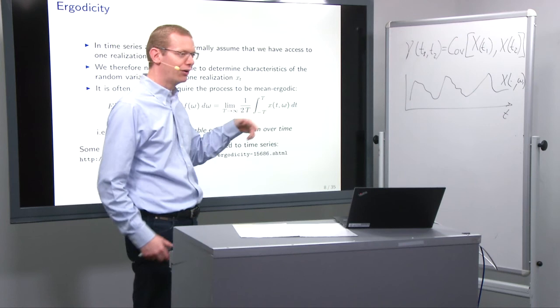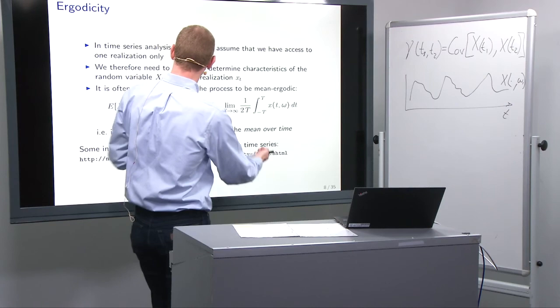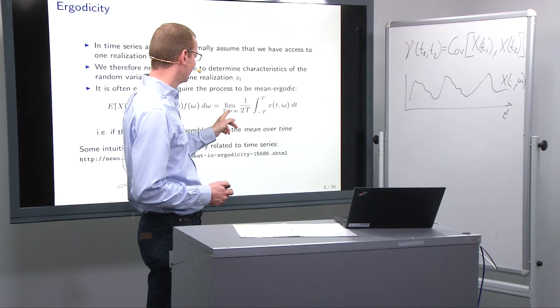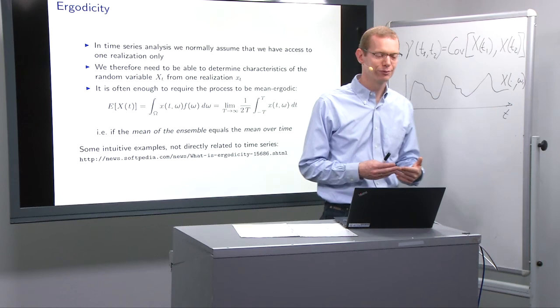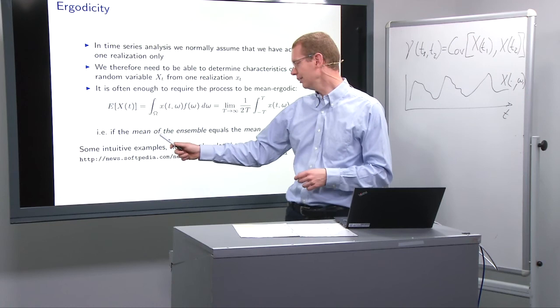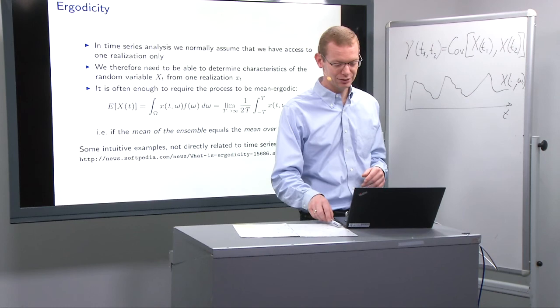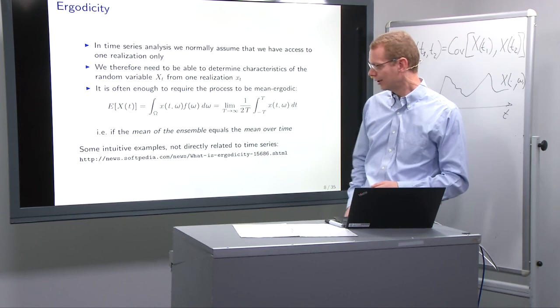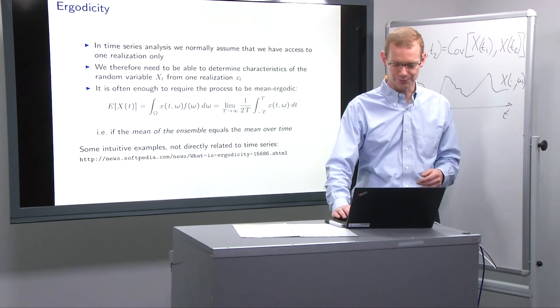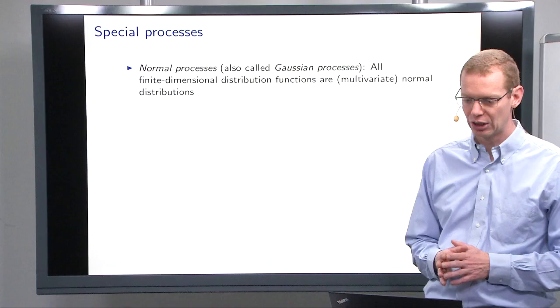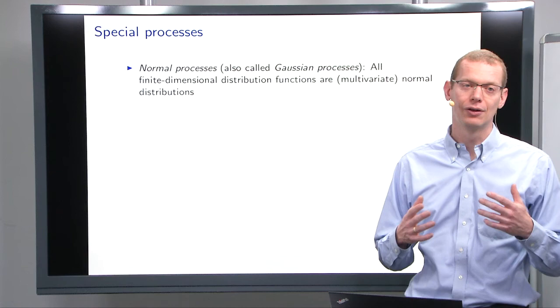and then as we increase the time when you are around the desired time point, then we get, in the limit where time is going to infinity, then we get the right value. So it means if the mean of the ensemble equals the mean over time, which will often be the case at least for all the processes we are going to look at here. And I added a small link here down to say if you want to have more discussions about what is ergodic density.